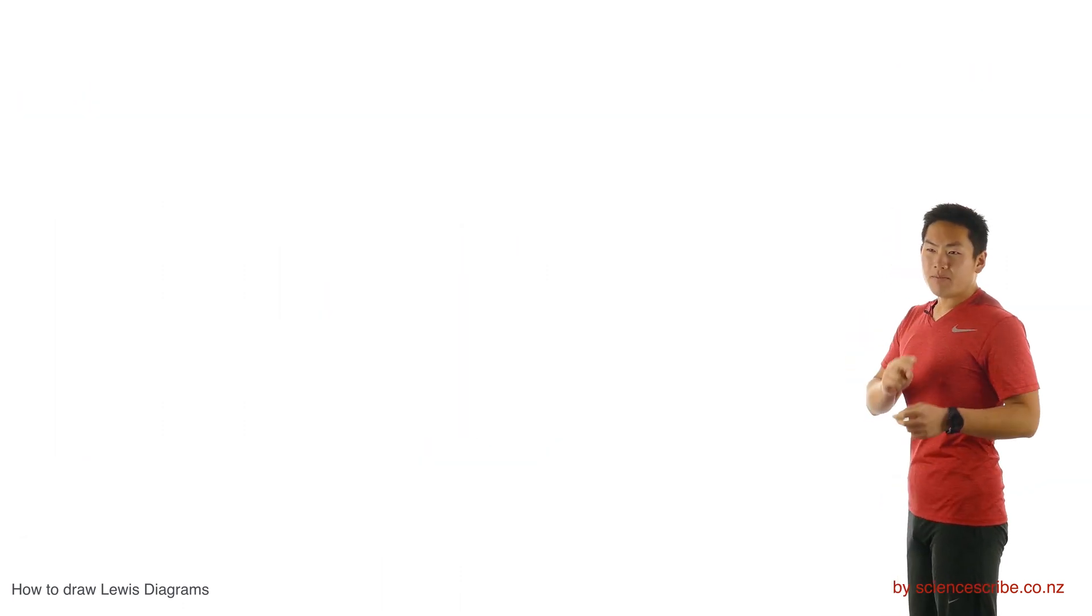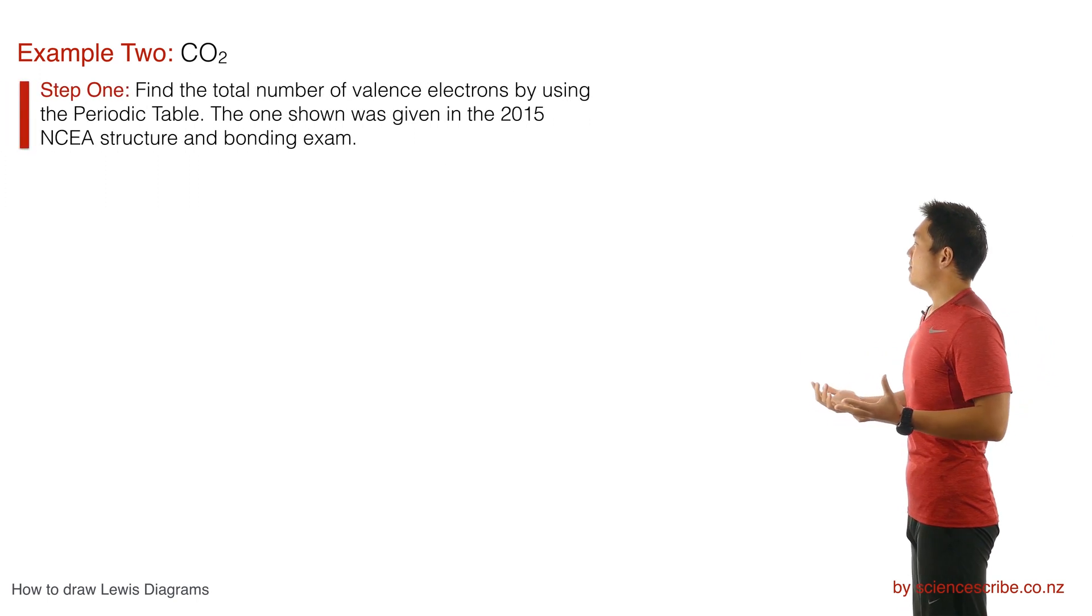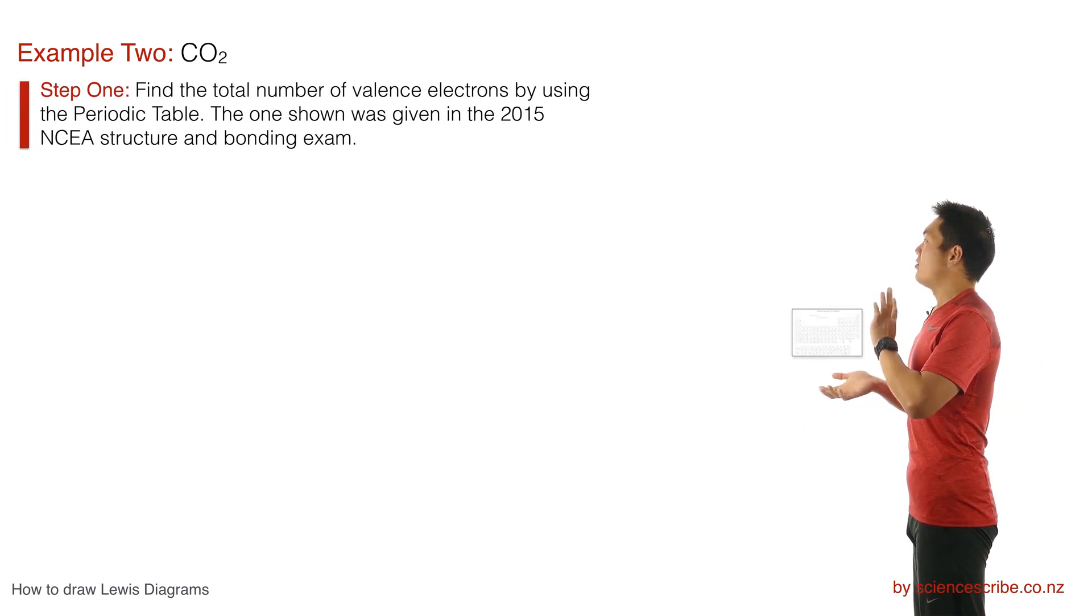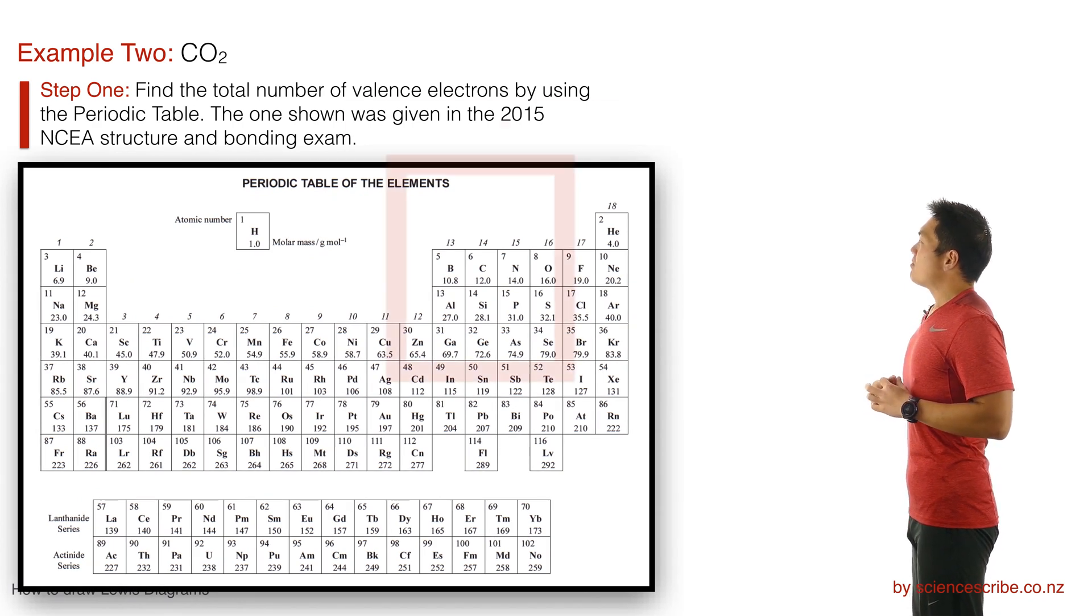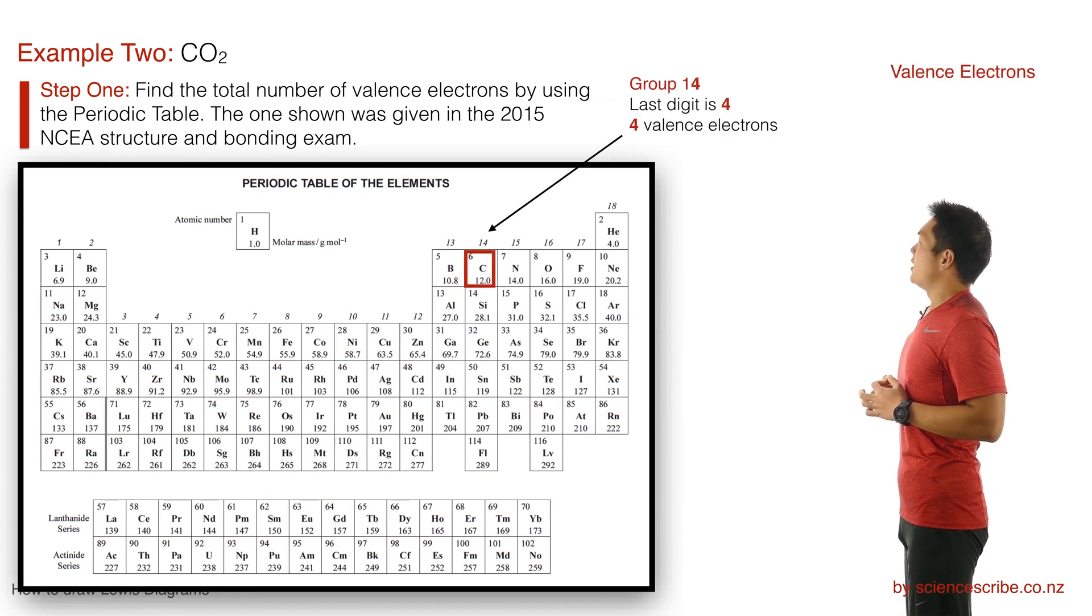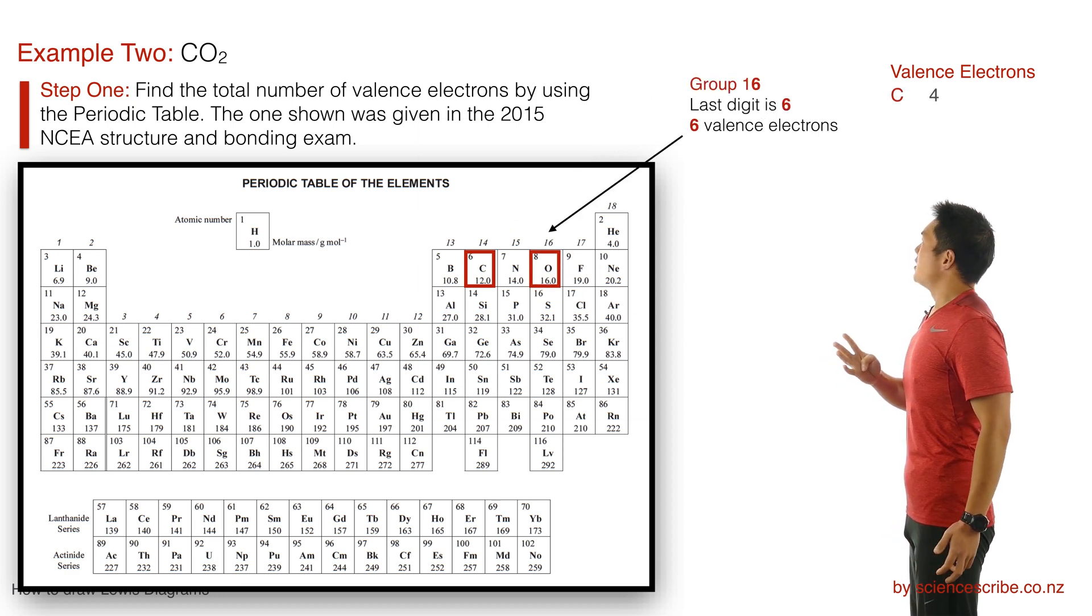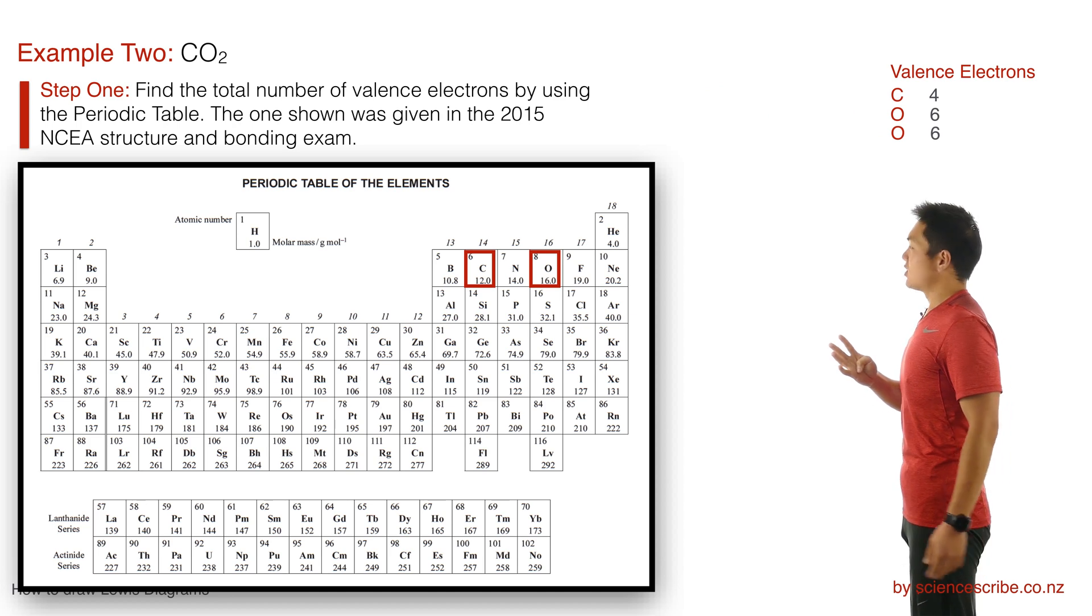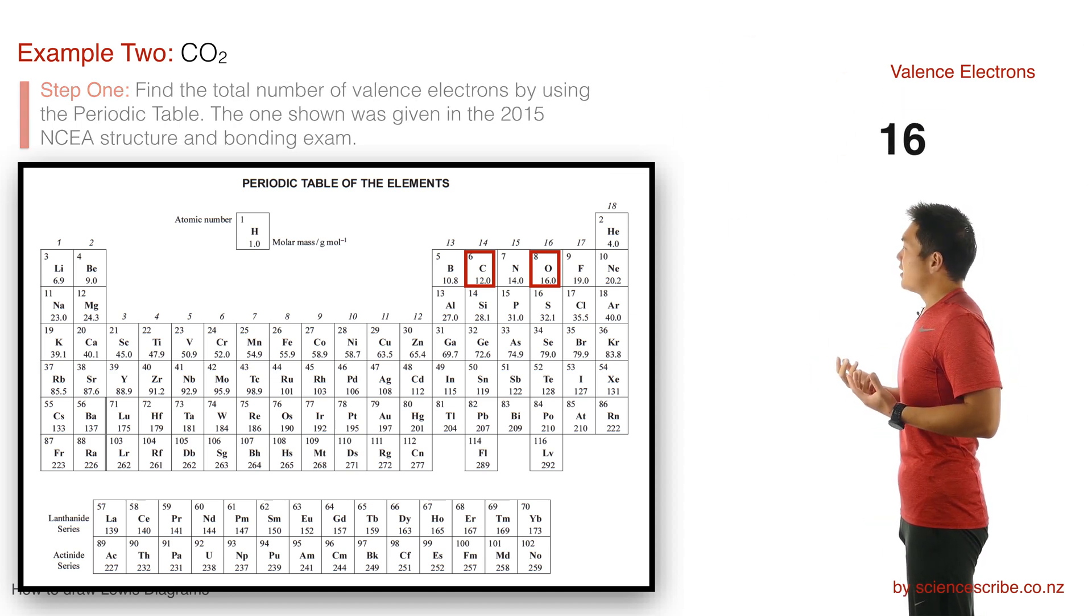In example number two, I'm going to show you the Lewis diagram for a molecule such as carbon dioxide. I do the exact same thing as I did in example one, so I'm going to need my periodic table again, and I'm going to look for the carbon and the oxygen on the periodic table. Carbon's in group 14, so carbon supplies four. Oxygen's in group 16, so that supplies six. Remember when I'm taking the last digit, this gives me a total of 16 valence electrons.